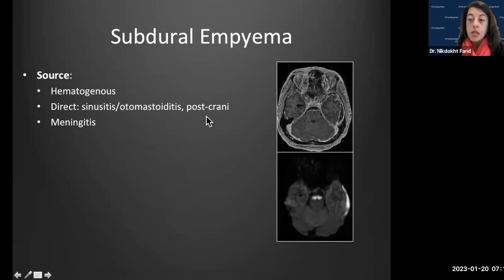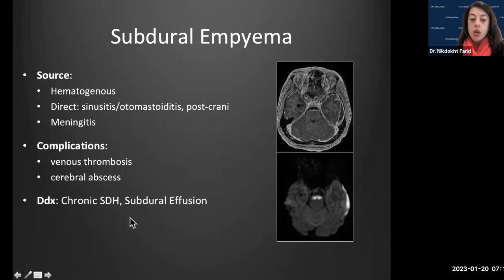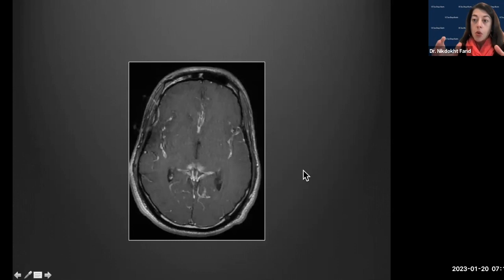Subdural empyemas can come from a direct source, hematogenous spread, leptomeningitis complications, venous thrombosis, or rupture into brain parenchyma causing cerebral abscess. The differential includes subdural hematoma and subdural effusion, but unlike empyema, those normally should not show marked restricted diffusion on DWI.